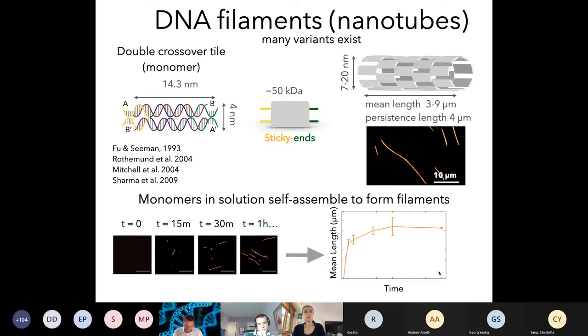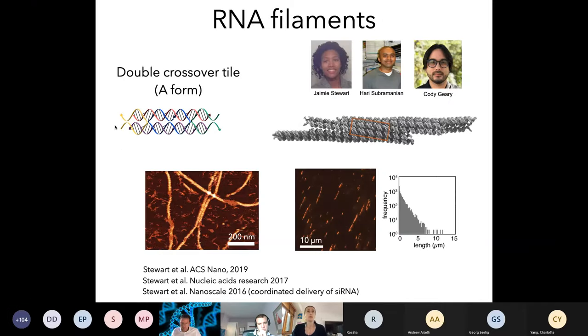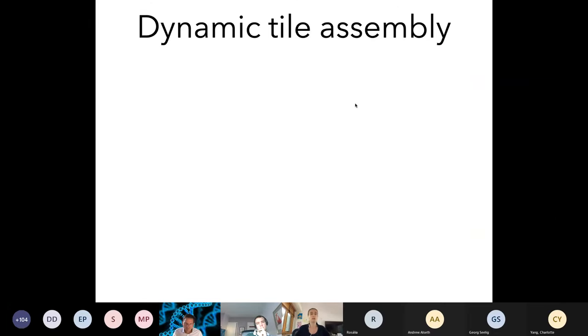I mentioned that there's different types of nanotubes. This particular type of tile could be made also using RNA. You need to adapt the design, the domains of the double crossover tile, to accommodate for the different helicity of RNA. But once that is done, you can obtain very nice nanotubes. If you're interested, here's a series of recent papers from our group.